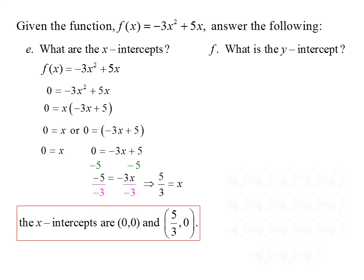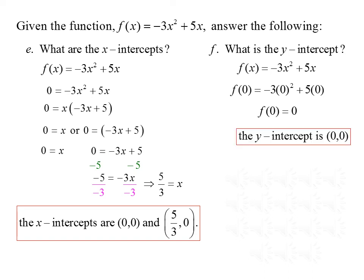Finally, we want to find the y-intercept of our function. Starting with f(x) equals negative 3x squared plus 5x, for the y-intercept we set x equal to 0. Plugging in 0 for x: f(0) equals negative 3 times 0 squared plus 5 times 0, which simplifies to f(0) equals 0. So the y-intercept is the point (0, 0).